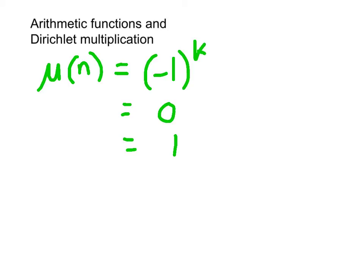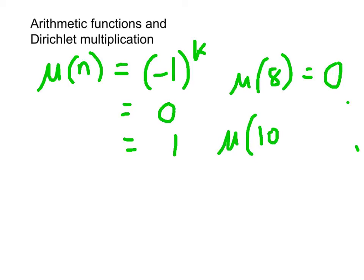So essentially, an example: mu of 8. Well, 8 has a square factor, so that must equal 0 — the square factor being 2 squared. For mu of 10: 10 is 2 times 5, so there are two prime factors, so it's minus 1 to the power 2, which is plus 1.